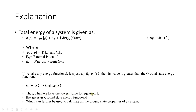When we have the lowest value for this equation, it gives us the ground state energy functional, which can then be used to calculate all the ground state properties of a system. When we plug in the ground state electron density, we get the lowest value. If the electron density we plug in is not the ground state electron density, the value of the energy functional will be greater than that of the ground state.